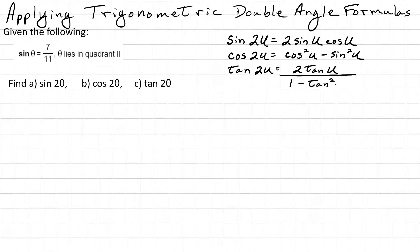However, I'm just going to use the fact that tangent 2u is also equivalent to sine 2u over cosine 2u. That way I don't have to calculate the tangent of theta separately, which makes life a little easier.